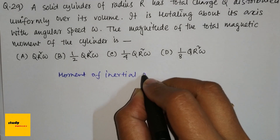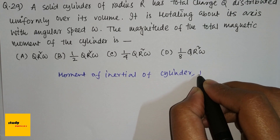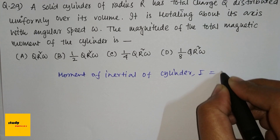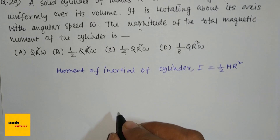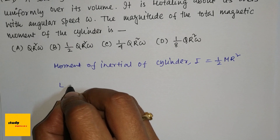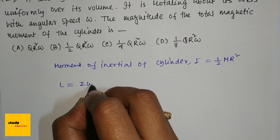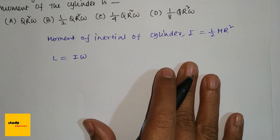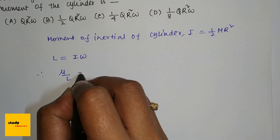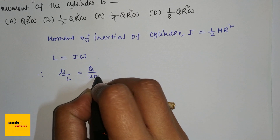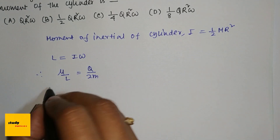We know the moment of inertia of a cylinder is I = ½mr², where r is the radius. The orbital angular momentum L = I × omega. And the gyromagnetic ratio μ/L = q/2m, where μ is the magnetic moment.